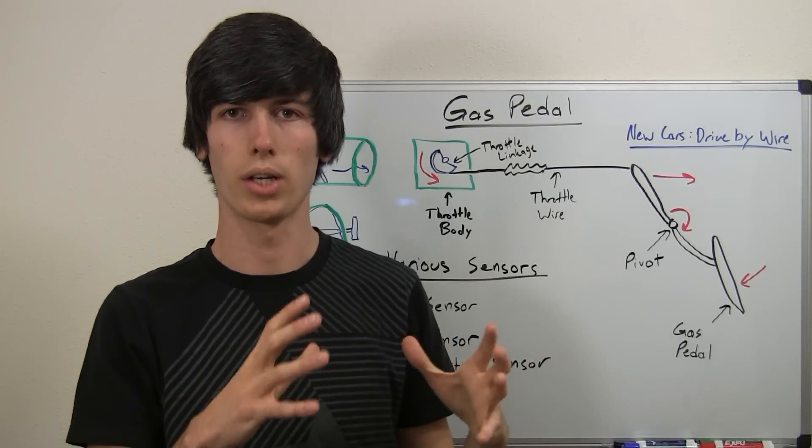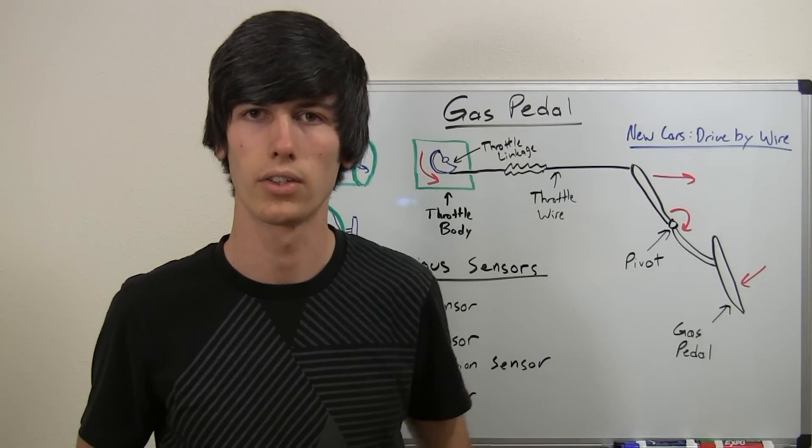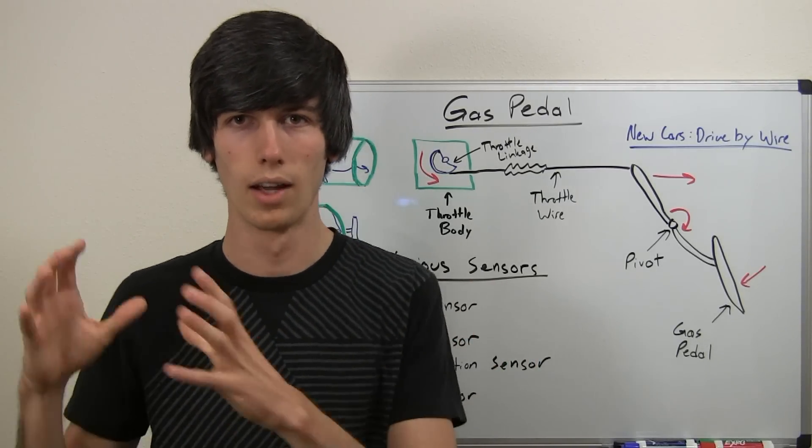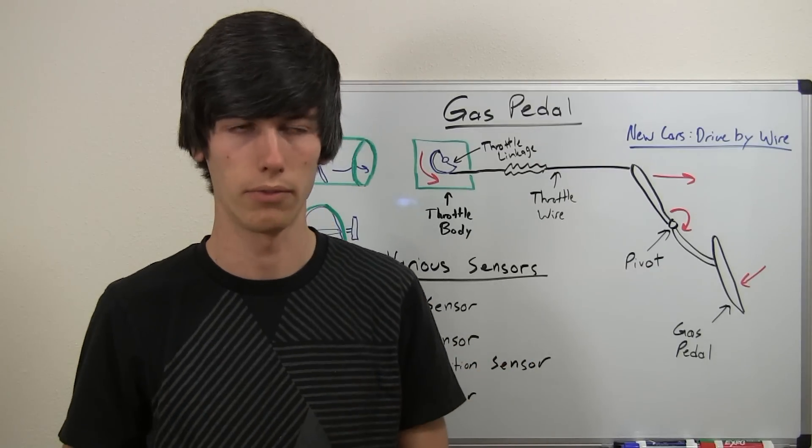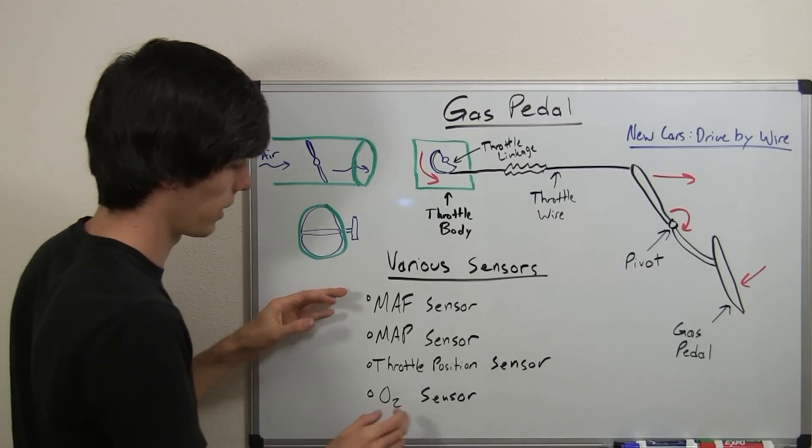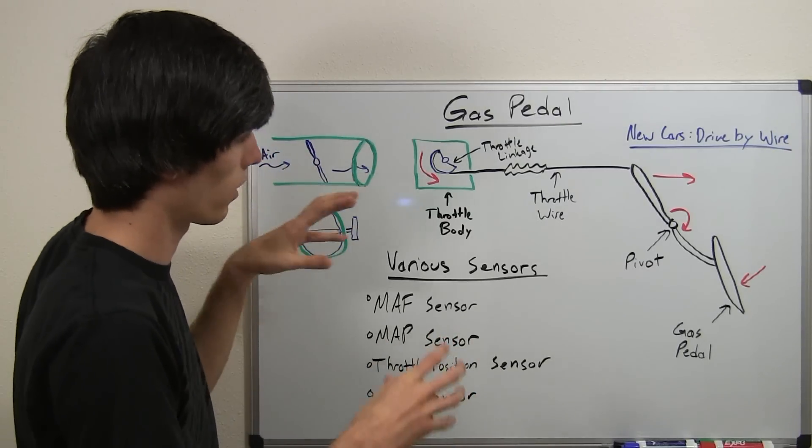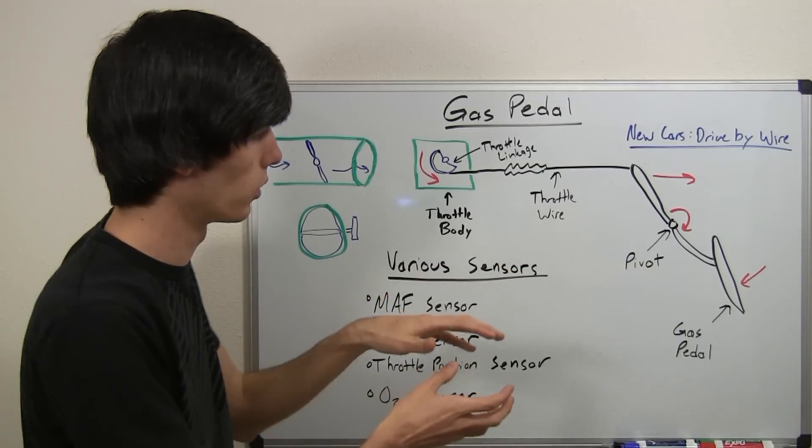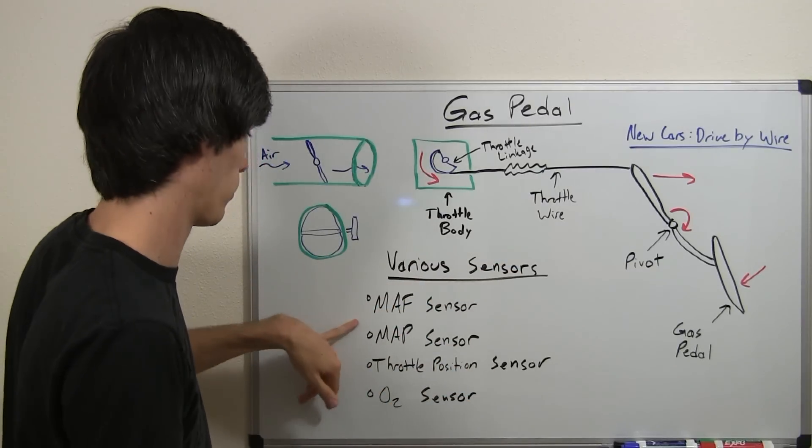So you want to keep an even ratio of air and fuel for gasoline engines, about 14.7 parts air to one part of fuel. So there's various sensors that are involved in ensuring that the amount of air is correct and the amount of fuel is correct that goes into the cylinders.